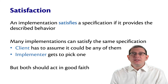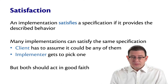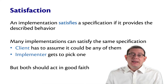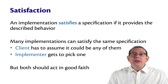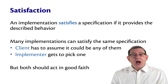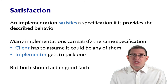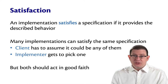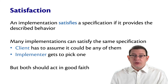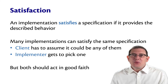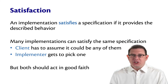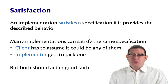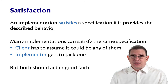We say that an implementation satisfies a specification if it provides the described behavior. Of course, there are many implementations that might satisfy a given specification. There's again a duality between the client and the implementer. The client can't make any particular assumption about which of those implementations the implementer chose, but the implementer does get, at the end of the day, to pick which one they want. That doesn't mean the implementer should be perverse or malicious — both parties should be acting in good faith in order to agree as to what the specification means.